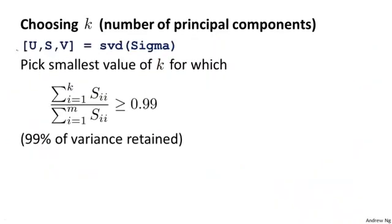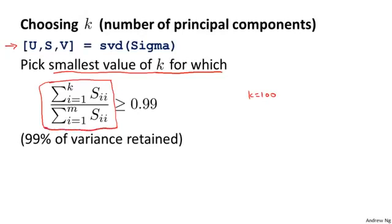So to summarize, the way that I often choose k when I'm using PCA for compression is I would call SVD once on the covariance matrix, and then I would use this formula and pick the smallest value of k for which this expression is satisfied. And by the way, even if you were to pick some different value of k, even if you were to pick the value of k manually, maybe I have a thousand dimensional data and I just want to choose k equals 100, then if you want to explain to others what you just did, a good way to explain the performance of your implementation of PCA to them is actually to take this quantity and compute what this is, and that will tell you what was the percentage of variance retained.